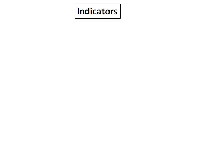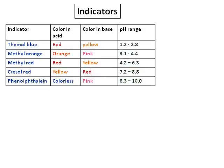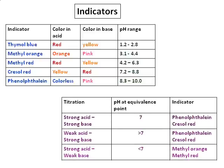So now let's see that. How do we choose this indicator? So the table of indicators is given over there. And I have given some five indicators and their colors in acid and colors in bases. And then their pH range is also given. That is the pH range in which the color changes. So suppose I need an indicator for a strong acid, strong base titration. I know that the pH of the strong acid, strong base titration is 7. At the equivalence point, it is 7.